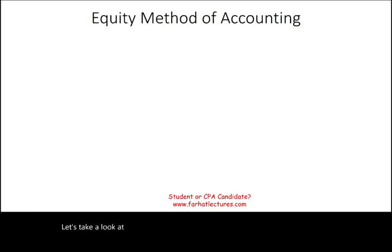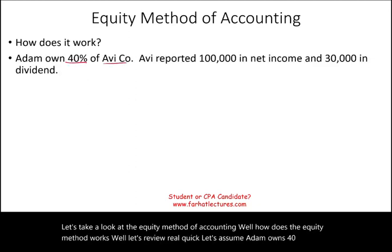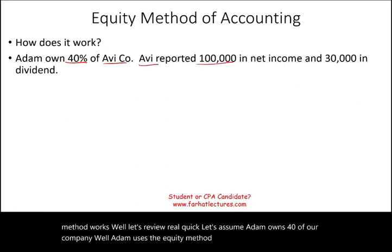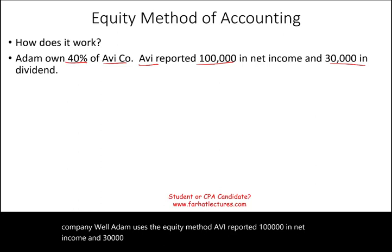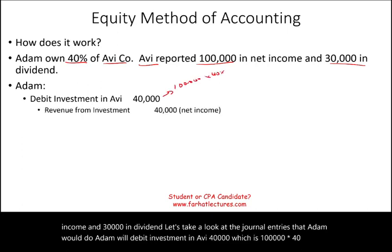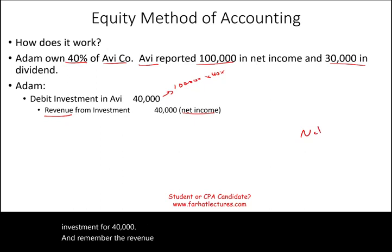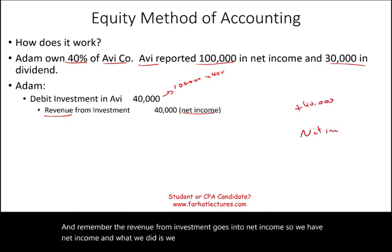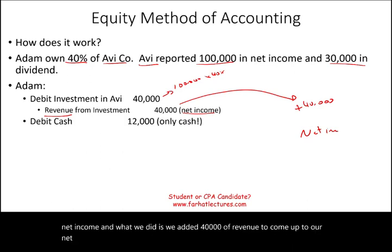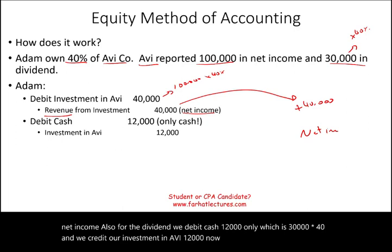Let's take a look at the equity method of accounting. Assume Adam owns 40% of Avi Company. Adam uses the equity method. Avi reported $100,000 in net income and $30,000 in dividends. Adam will debit Investment in Avi $40,000 (100,000 × 40%) and credit Revenue from Investment $40,000. The revenue from investment goes into net income, so we added $40,000 of revenue to arrive at net income.